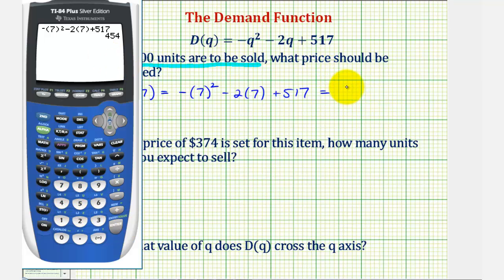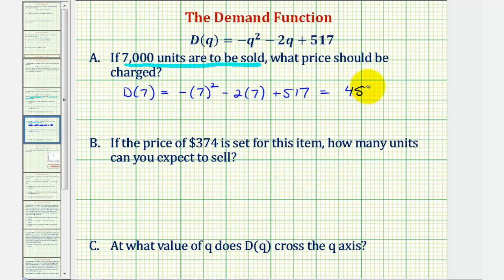plus 517. So this equals 454, which should be the price if 7,000 units are to be sold.